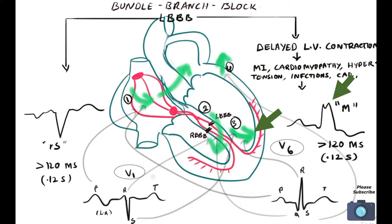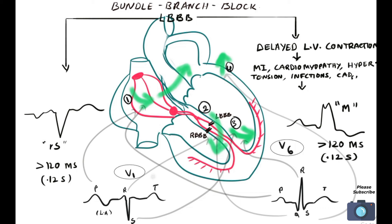In V6 of left bundle branch block, we can see an M-shaped R wave. The R wave is responsible for the electromotive force at position 3, and the interaction of the S wave and R wave produces this M-shape pattern, as it takes longer time to complete the R wave in V6.